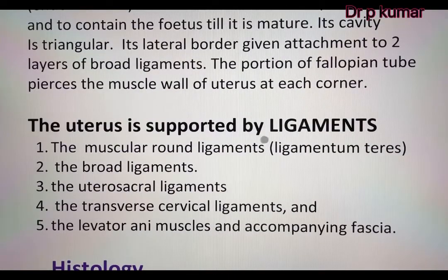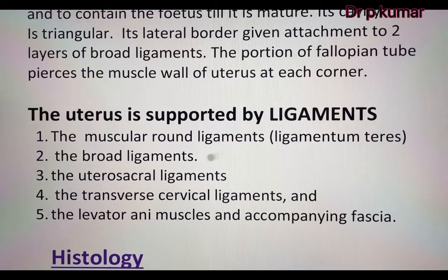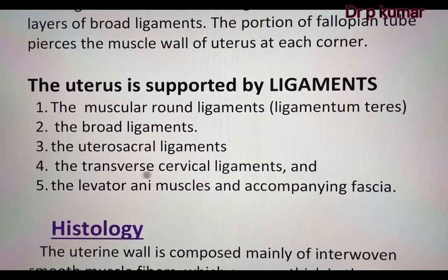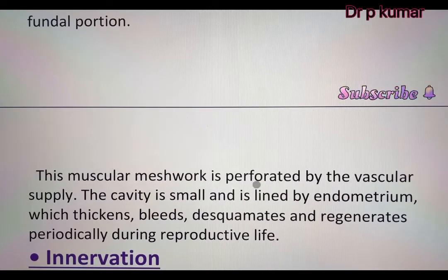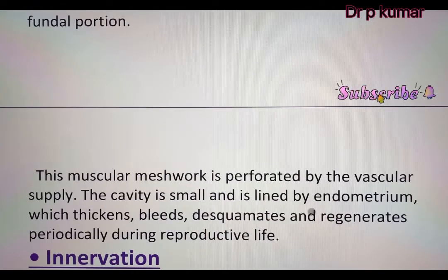The uterus is supported by ligaments: first, the muscular round ligament; next, the broad ligament; the utero-sacral ligament; and fourth, the transverse cervical ligament and the levator ani muscles and accompanying fascia. Histology: The uterine wall is composed mainly of interwoven smooth muscle fibers, which are especially thick in the fundal portion. The muscular meshwork is perforated by the vascular supply. The cavity is small and is lined by endometrium which thickens, bleeds, desquamates and regenerates periodically during reproductive life.